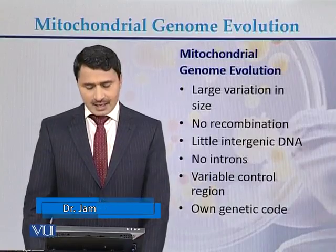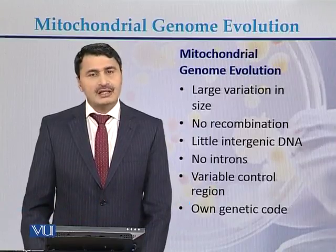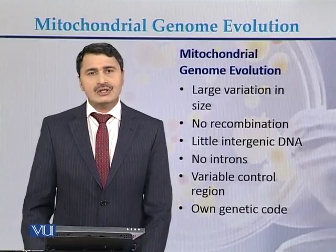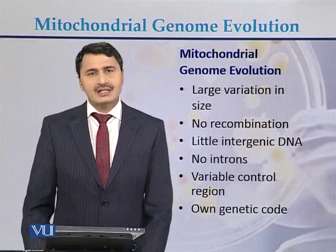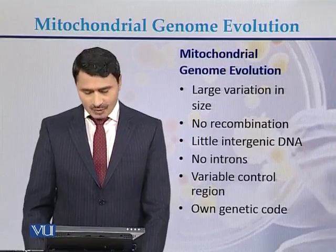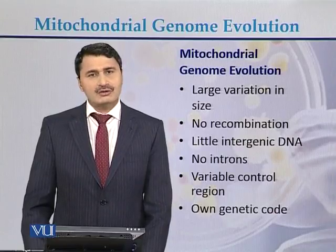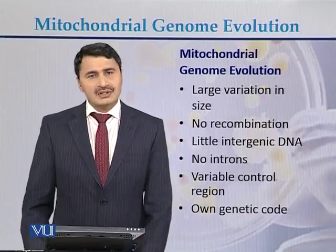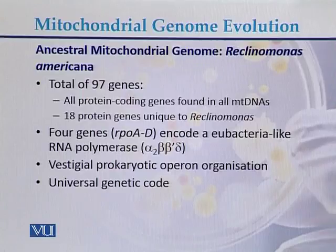There is little intergenic DNA and almost no introns, particularly in animals, but in plants some introns are found. There is a variable control region and its own genetic code. These are some of the key characteristics of the mitochondrial genome.